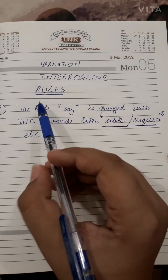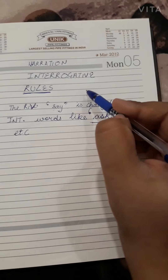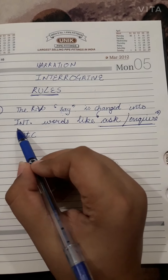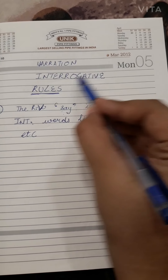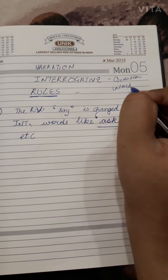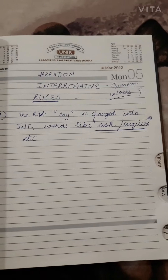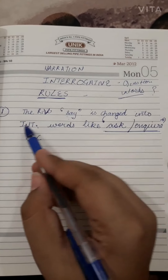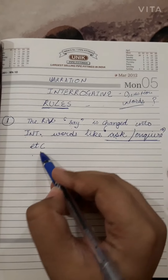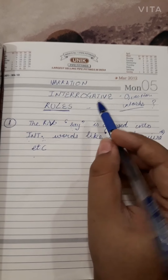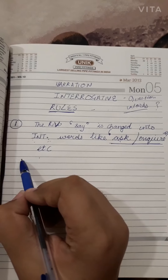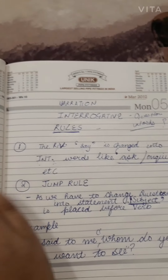We will start with the rules. The first rule is about the reporting verb 'say.' As you all know, we have a reporting verb in the reported speech. Interrogatives are question words used with the question mark. So 'say' changes into interrogative words like 'ask' and 'inquire.' Rule one states that the reported verb 'say' changes into interrogative verbs like 'ask' and 'inquire.'